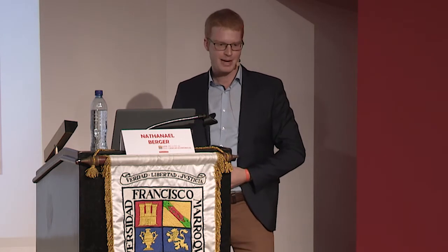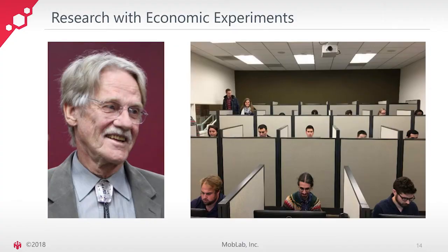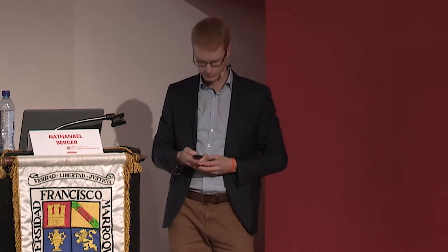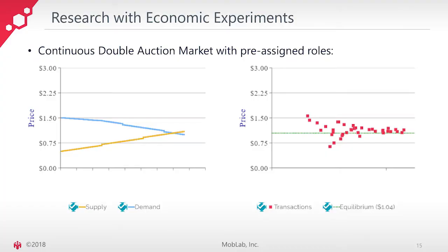To study the isolated impact, we conducted a laboratory study with two treatments — a high-frequency trading treatment and a treatment without high-frequency trading. One of the founding fathers of experimental economics, Vernon Smith, was the first to show in a laboratory experiment with buyers and sellers trading with one another that markets converge to what economic theory predicts — the equilibrium price and equilibrium quantity. That's an example I conducted with MobLab at the University of California, San Diego.